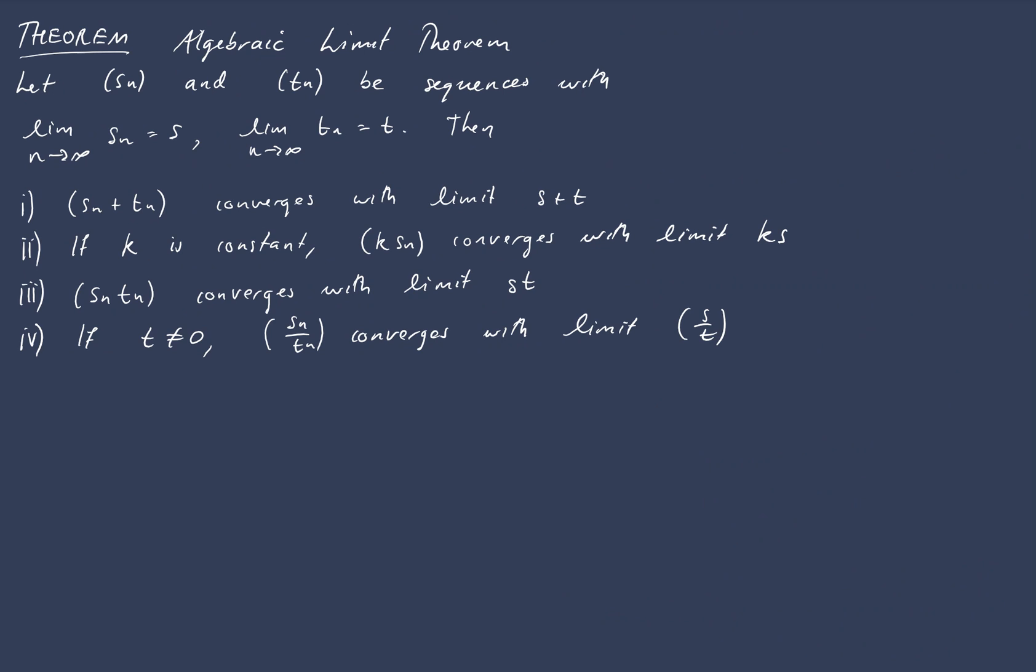And the final thing that I want to talk about in this video is the so-called algebraic limit theorem for sequences. Now this is a theorem that just justifies the various algebraic operations that we might like to perform on our sequences. So we've got two sequences Sn and Tn and they converge so we have limit values S and T for these two sequences.